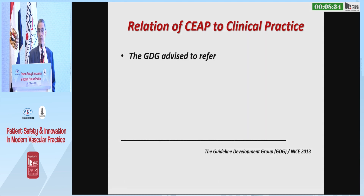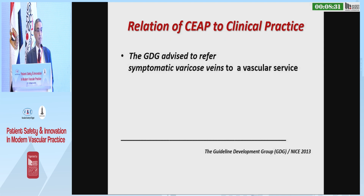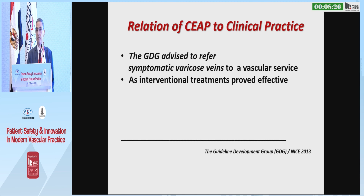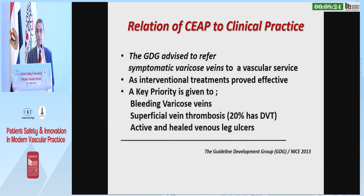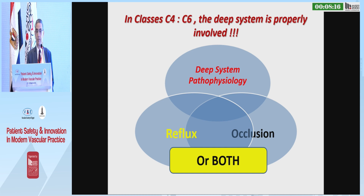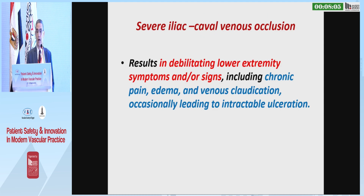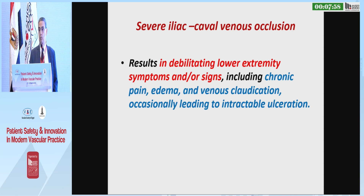Regarding the relation of CEAP to clinical practice, the guideline development group advised to refer symptomatic varicose vein to vascular service because interventional treatment is more effective, especially for bleeding varicose vein, superficial vein thrombosis, and active and healed venous ulcers. But in class C4 and C6, a deep vein is probably involved by reflux, obstruction, occlusion, or both, and severe iliac-caval venous occlusion results in debilitating lower extremity symptoms or signs.